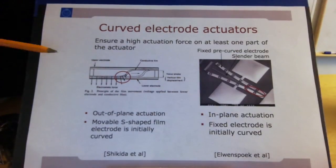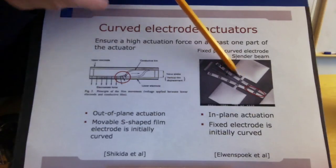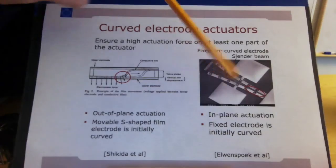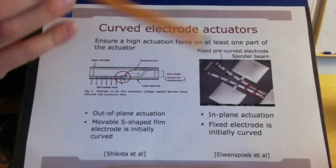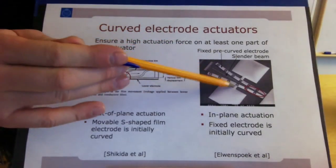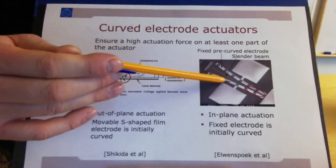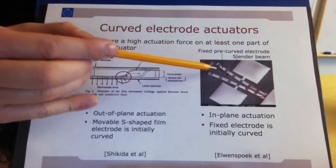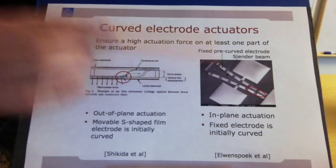Here you see an out-of-plane version, and on the other side an in-plane version where these curved structures are the two fixed electrodes, and this free-hanging beam can either roll onto the left side or the right side. You can also see small dots here — these are free-standing structures with little pins sticking out, so as the actuator rolls down, it rolls in contact with these pins and cannot touch the counter-electrode, which would otherwise cause a short circuit.